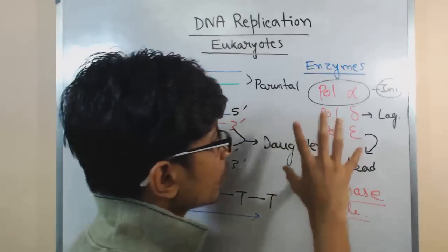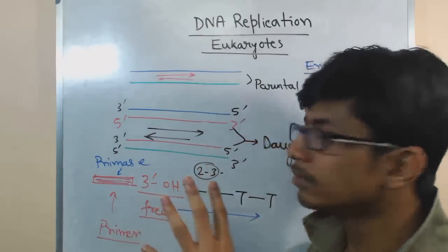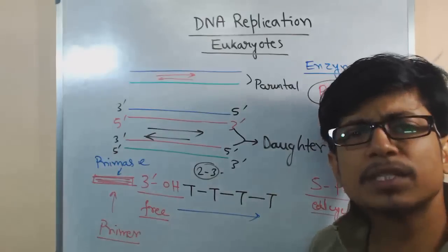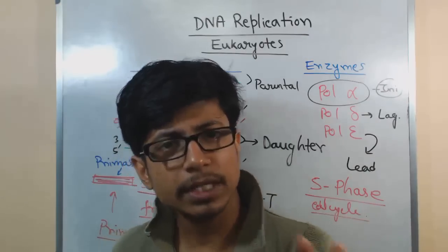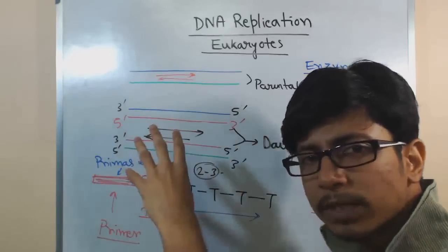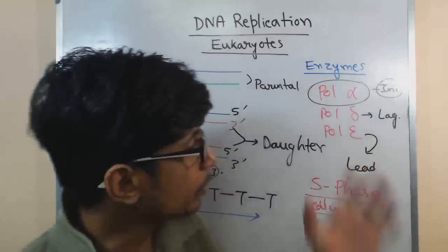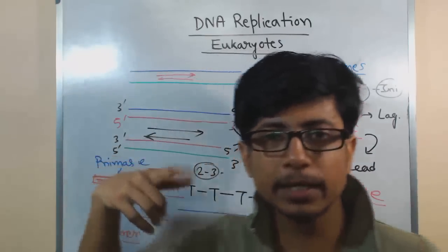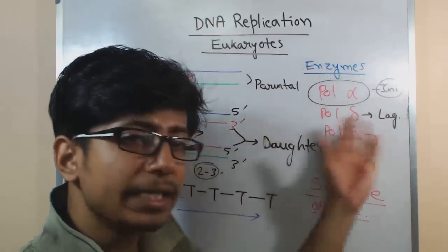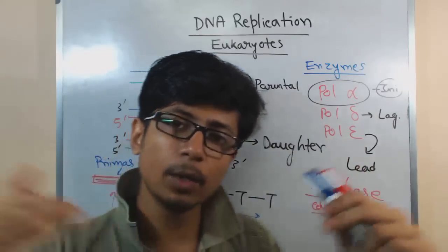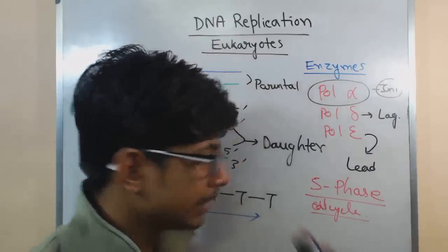In prokaryotes, the genome is small and simple. There is a particular origin of replication called oriC present in prokaryotes — the process starts from there and then the whole process is done. But in eukaryotes, the genome is linear, whereas in some prokaryotes the genome is circular. In the case of linear DNA in eukaryotes, there are multiple origins of replication — multiple ori sites — to start the process, and then they merge with each other.